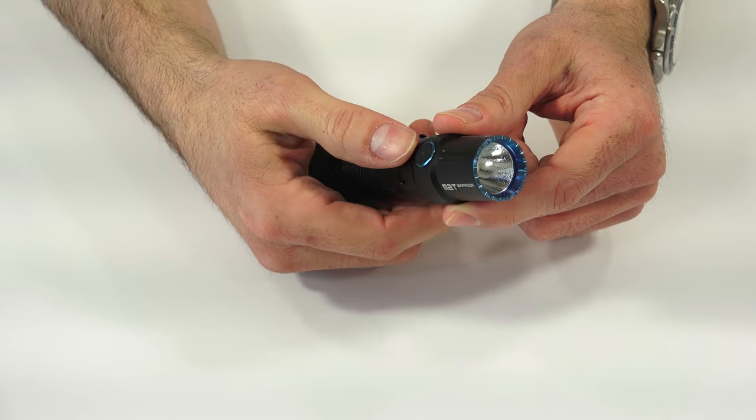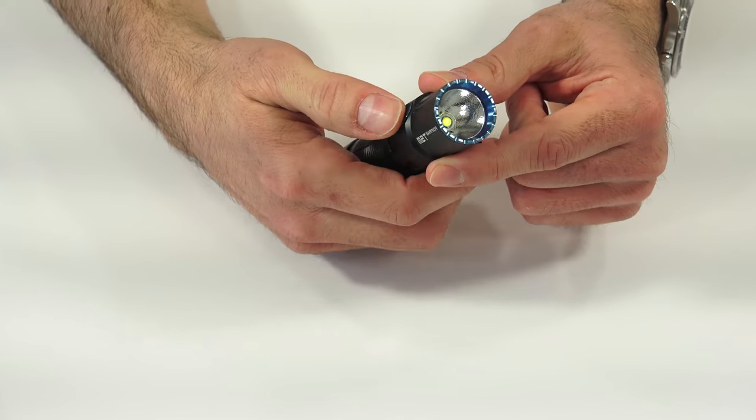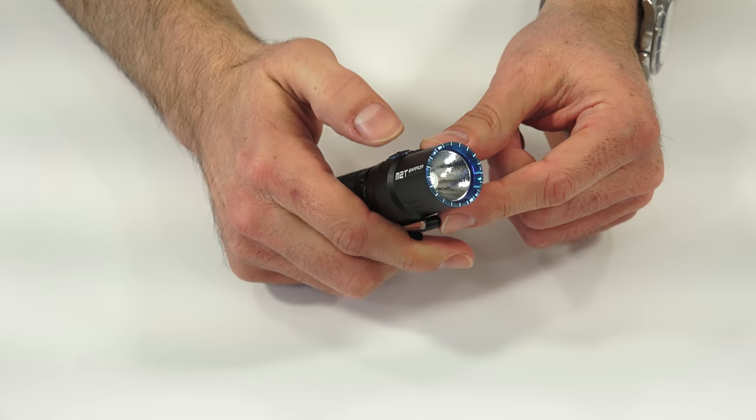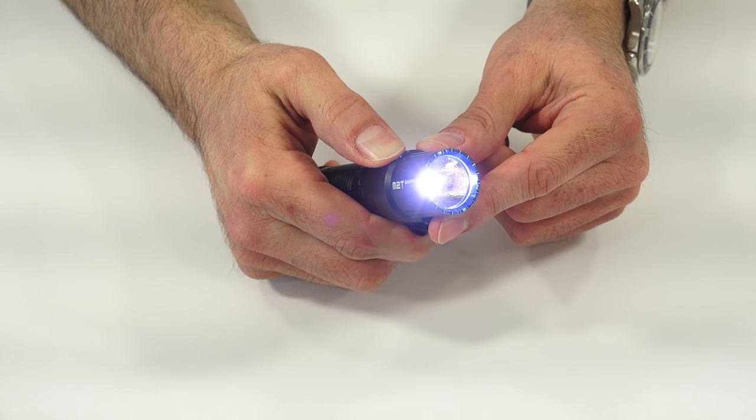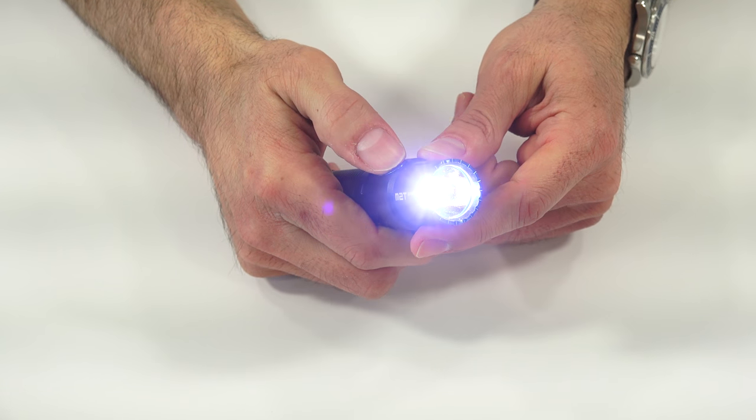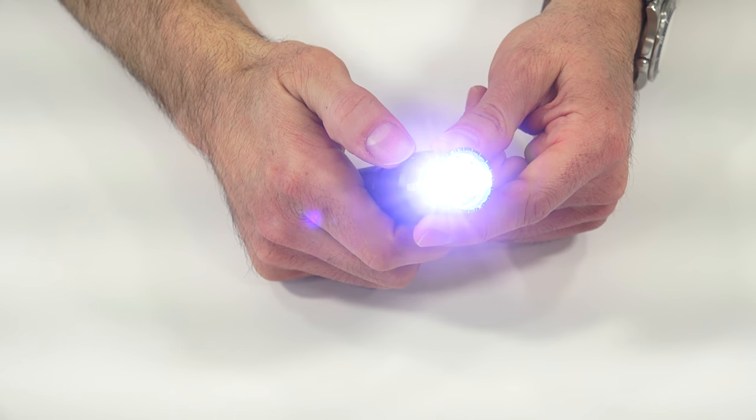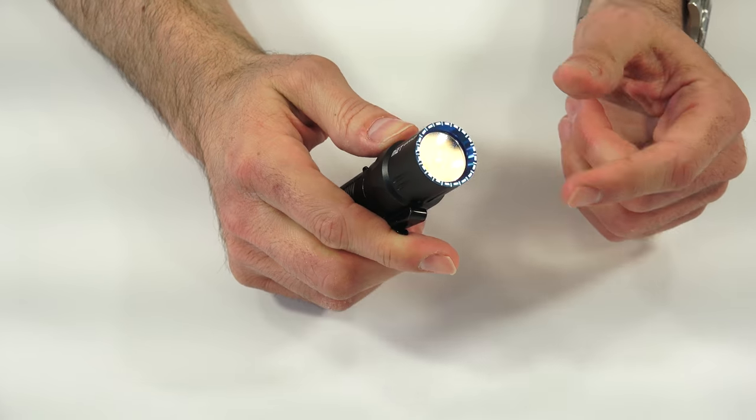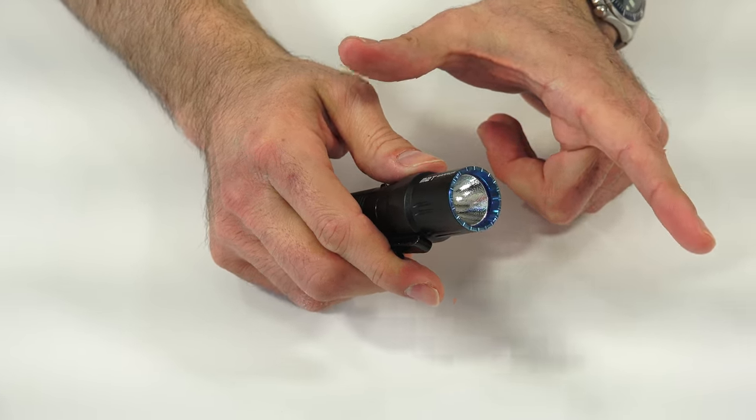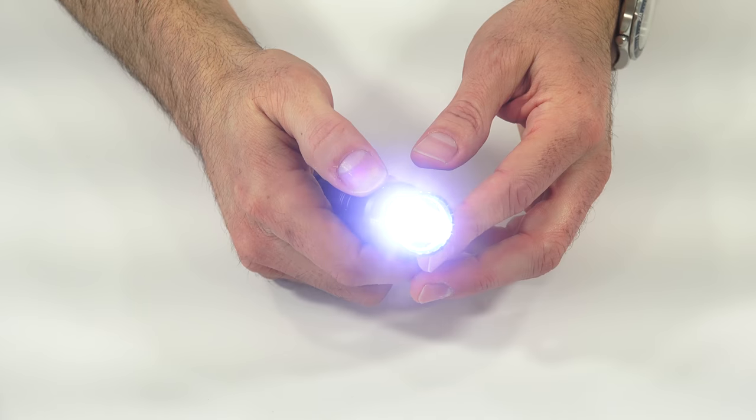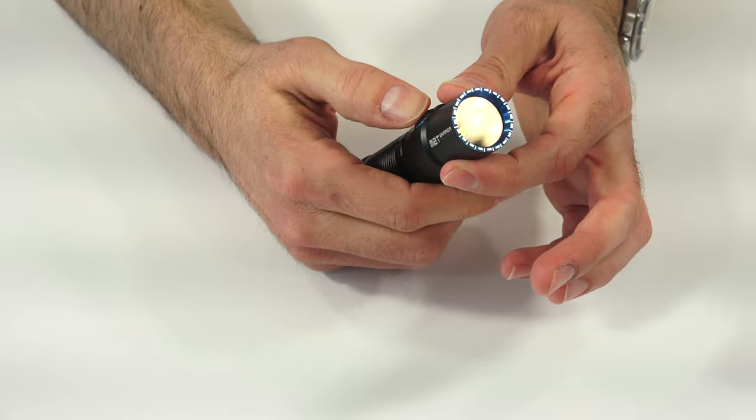The side button here is similar to their S series lights, functions just the same way. So if you long press it, it will come on to the moonlight mode, and then hold it down, and it will ramp through the different brightnesses. And then from any brightness, if you want to get to the turbo, double click to the turbo. Triple click goes into the strobe. It does have mode memory for everything but the moonlight and the turbo. So whatever you turn it off on, it will come back onto that.